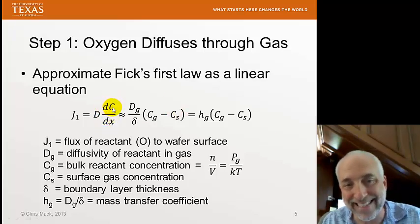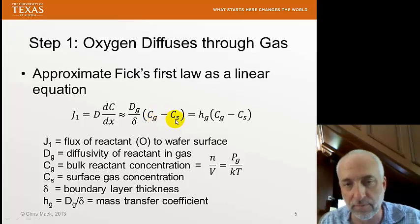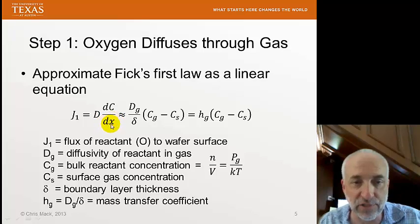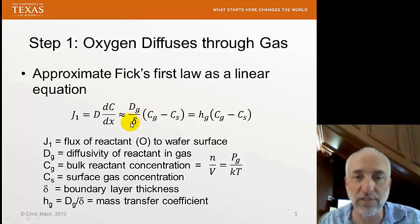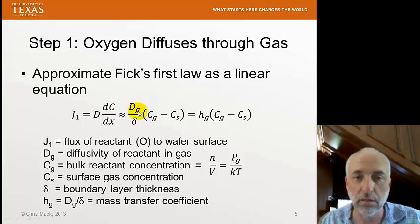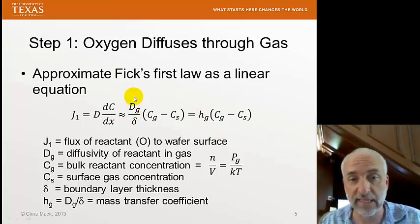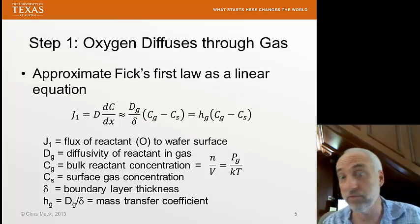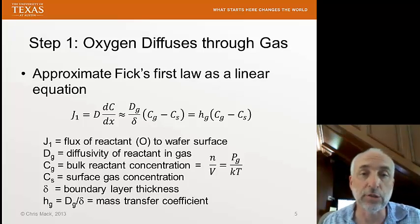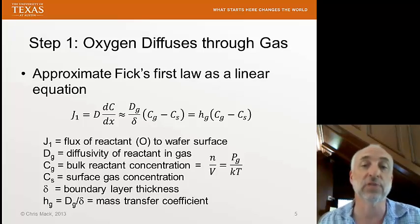We make a simplifying assumption and linearize Fick's first law of diffusion. Because the concentration differences are small, this approximation is reasonable. We say dC — the change in concentration — is just the difference from bulk to surface, and replace dx with a boundary layer thickness delta. Across thickness delta, the concentration linearly changes from C-G to C-S, and D-sub-G is the diffusivity of oxygen in the gas. We take the ratio D-G over delta and call it H-sub-G, the mass transfer coefficient, so we've turned the differential equation into a difference equation.